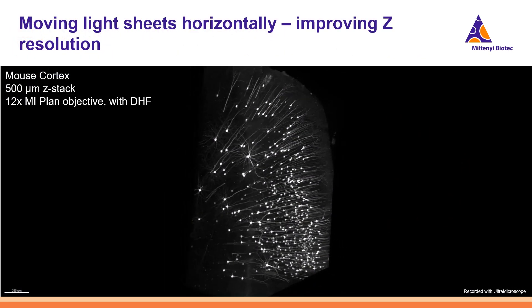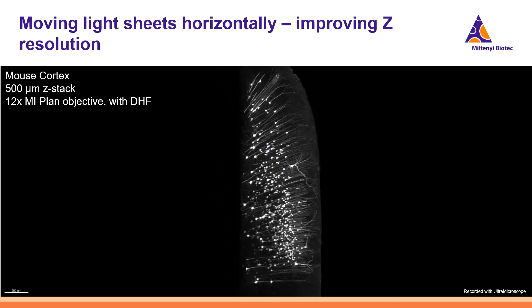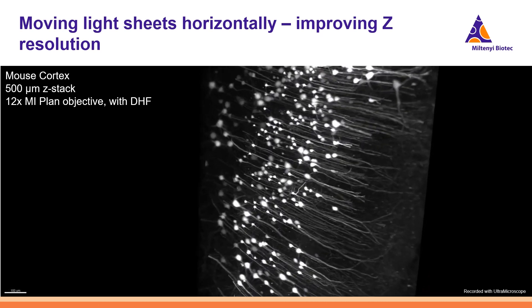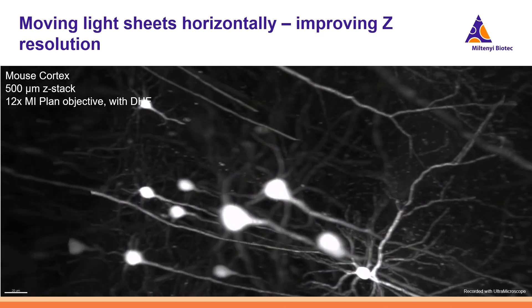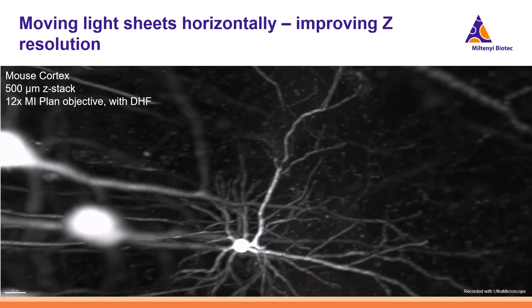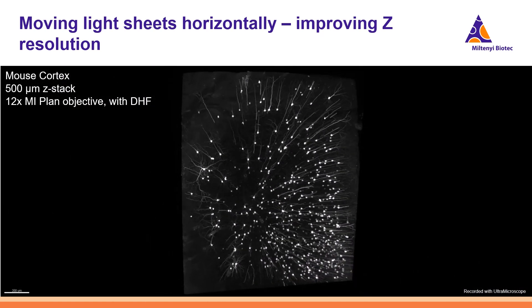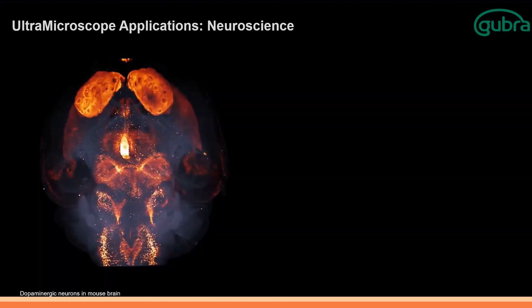Excellent Z resolution can be achieved by the unique sheet illumination of the Ultra Microscope. As you can see in this 3D rendering, even after going deeper into the tissues, you can still see the finer structures. Having covered the fundamental principles, benefits, and technical details of the Ultra Microscope, I would now like to shift my focus to its key applications.